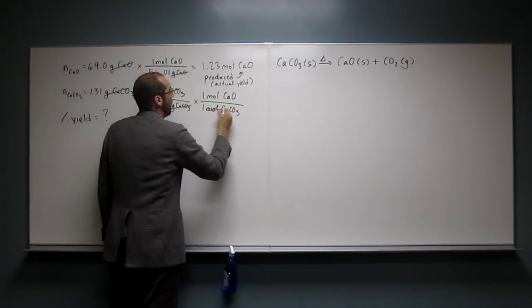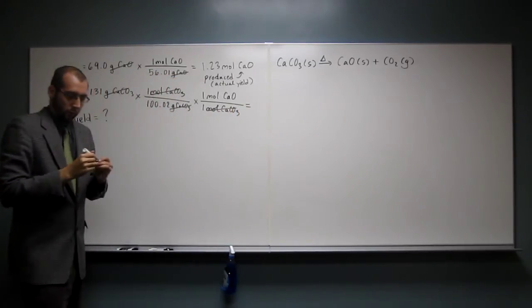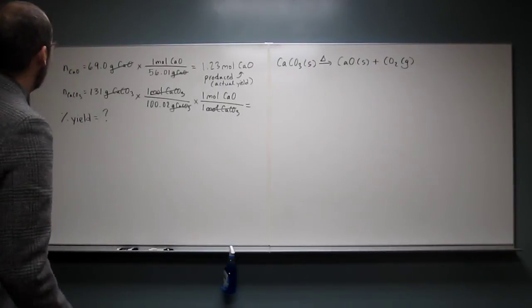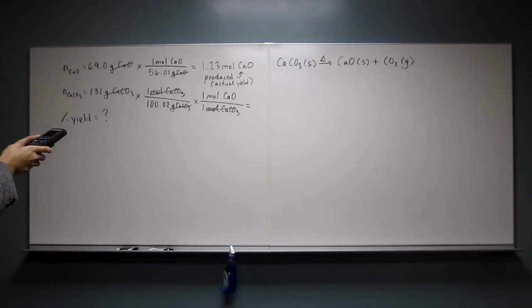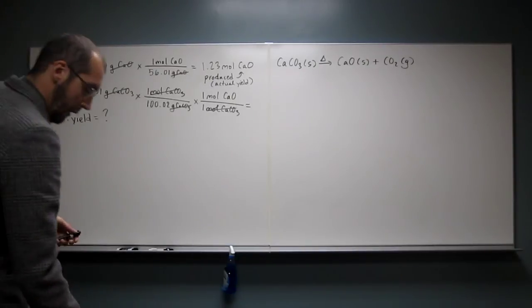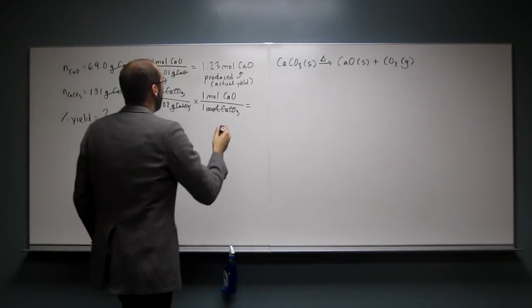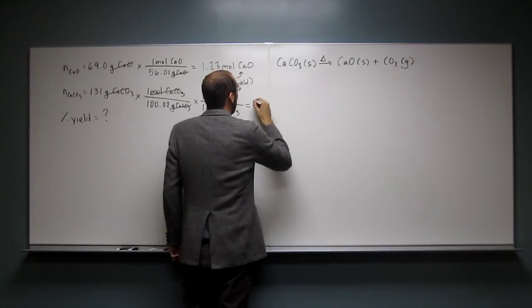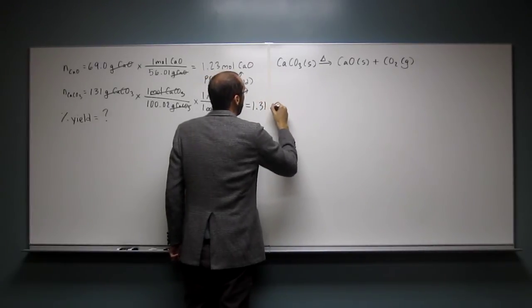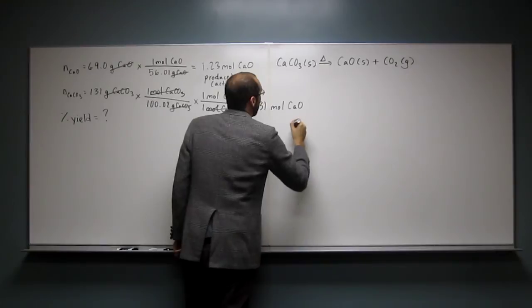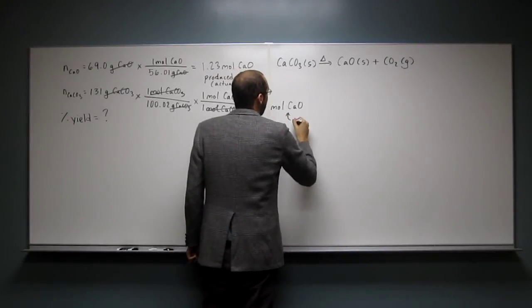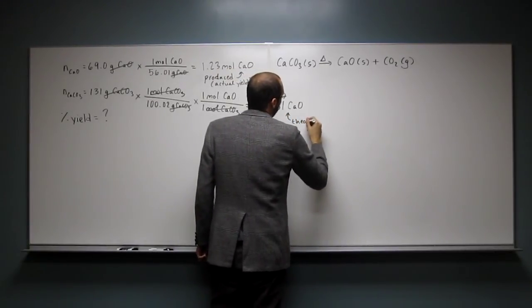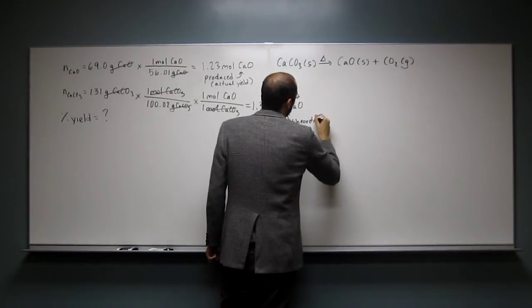So 131 divided by 100.02 and I get 1.31 moles of calcium oxide. This is what we call the theoretical yield.